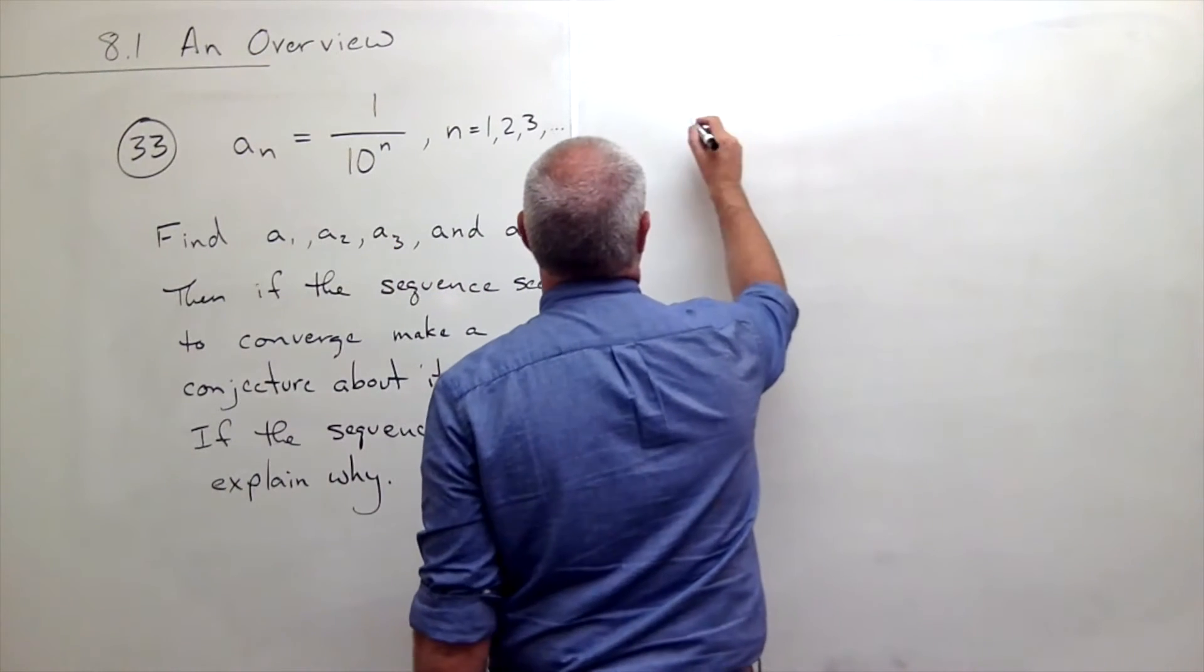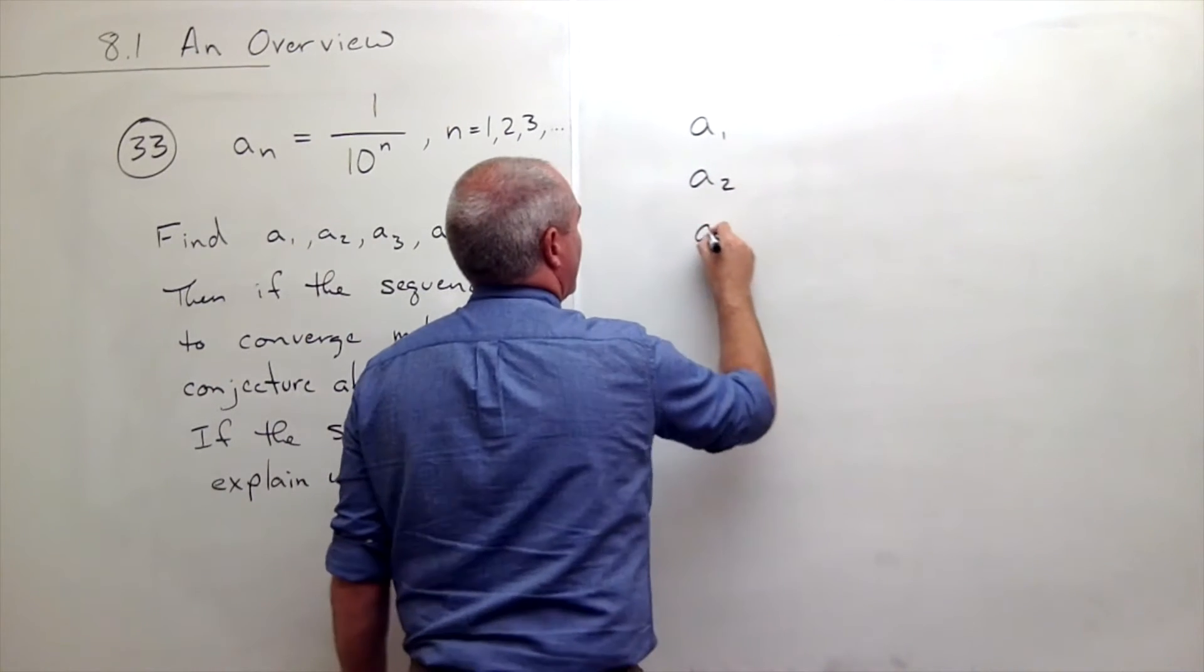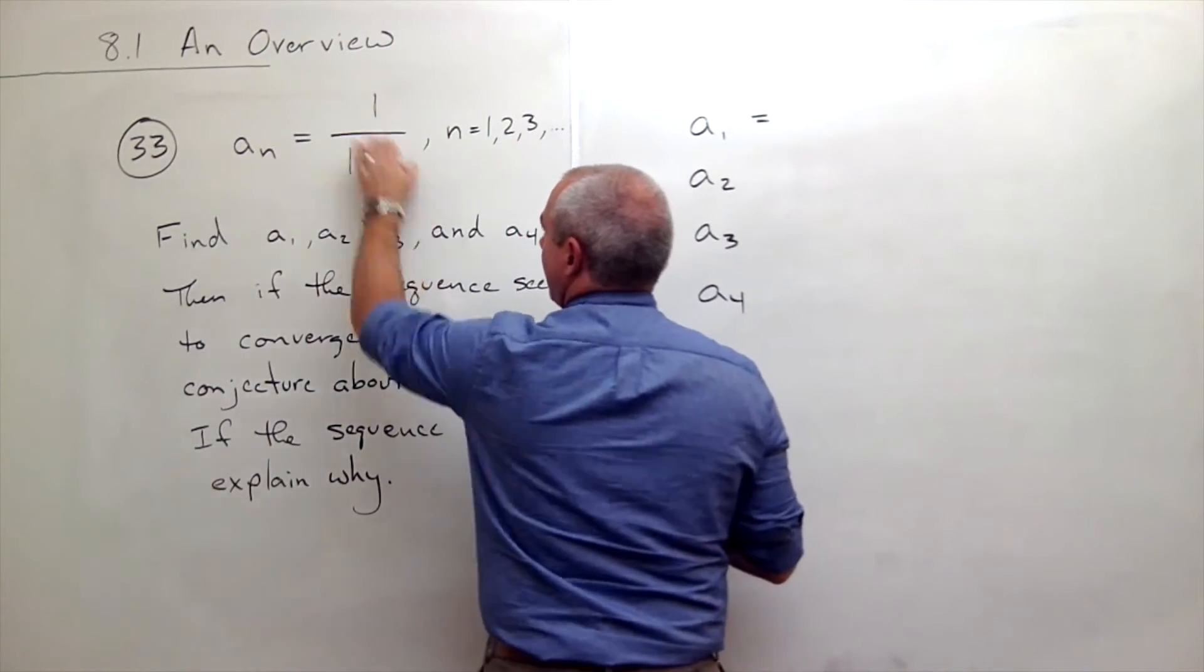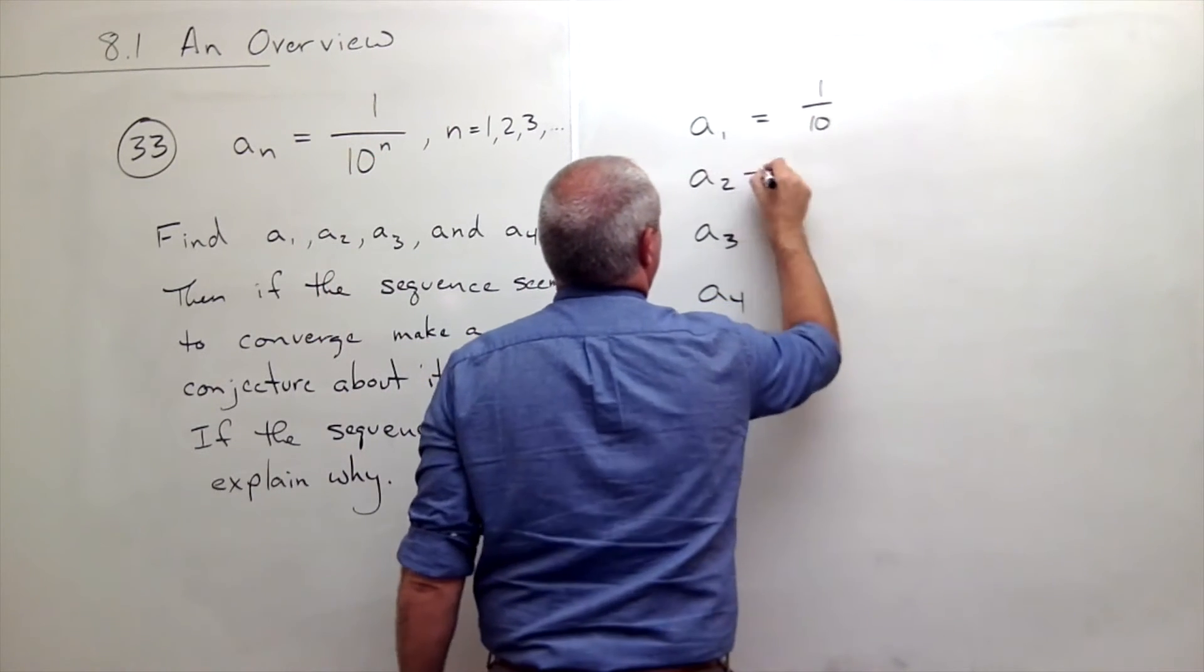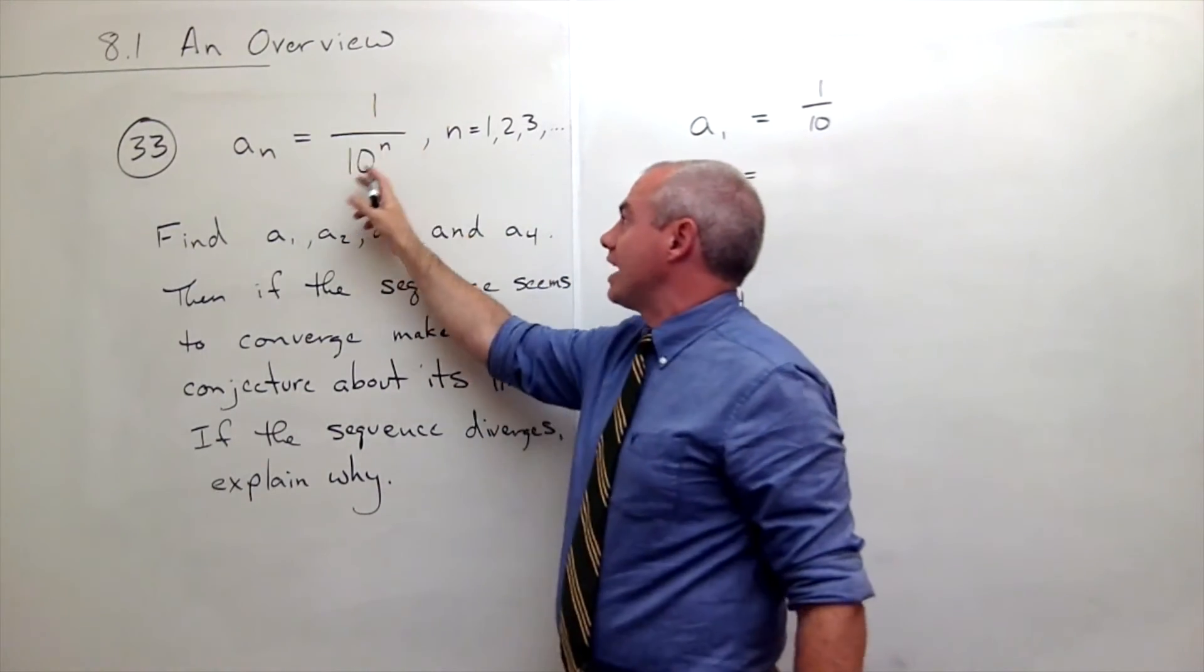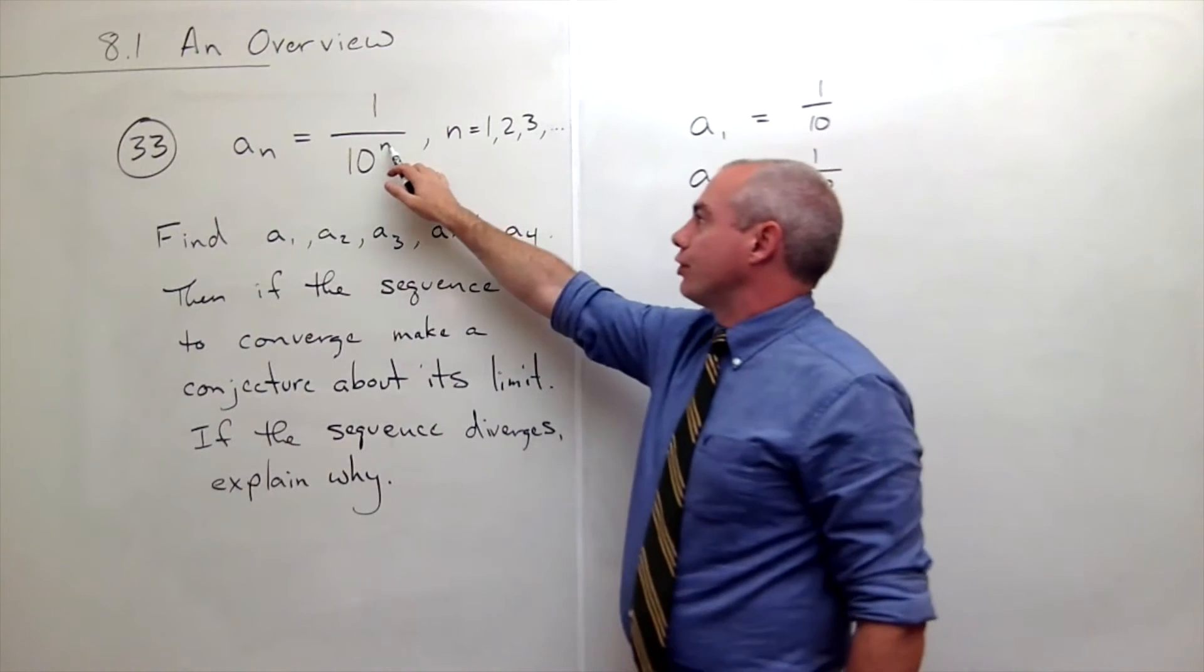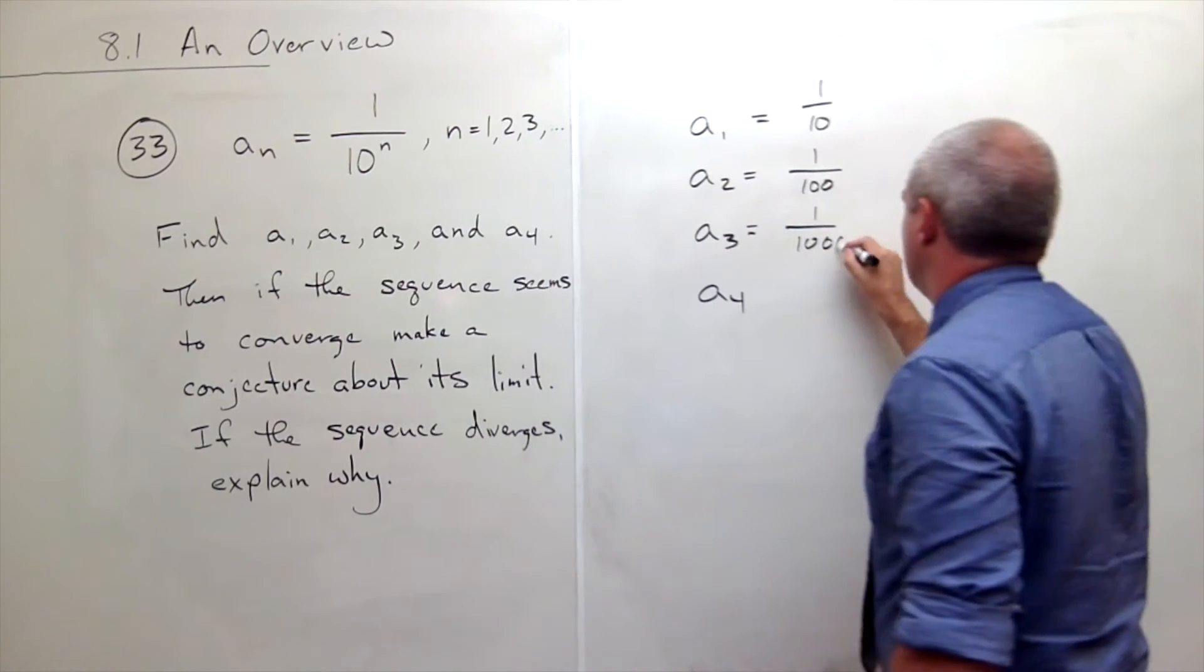So if we have, first of all we want to find a1, a2, a3, and a4. a1, I just plug in 1 for n and I get 1 over 10 to the first, or just 1 over 10. For a2, I plug in 2 for n and I get 1 over 10 squared, which is 1 over 100. For a3, I plug in 3 for n and I get 1 over 10 cubed, or 1 over 1,000.